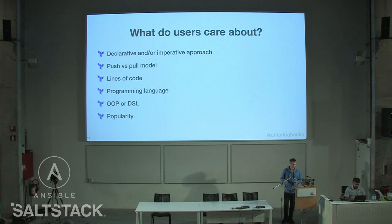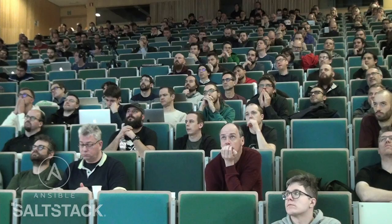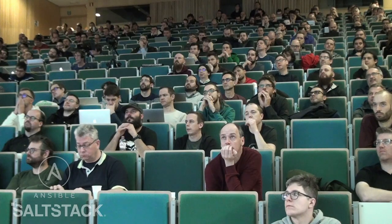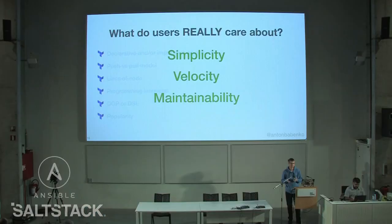Now we have to think about what users actually care about. Think about declarative versus imperative, push versus pull, and a bunch of other things — yeah, it's less lines of code or I can use a cool programming language. Object-oriented is better than DSL, and so on. Or you can say this is a very popular tool so I'm going to stick with it. But really: simplicity, velocity, and maintainability — that's the key thing we're going to need.